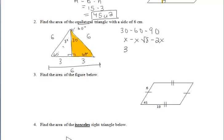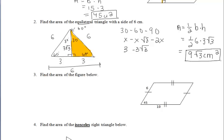So we know the side across from our 30 degree angle which is 3. So the side across from our 60 degree angle is 3 radical 3 which is the height of our triangle. So we do one half of our base of 6 times our height of 3 radical 3 to get 9 radical 3 centimeters squared for the area of our triangle.